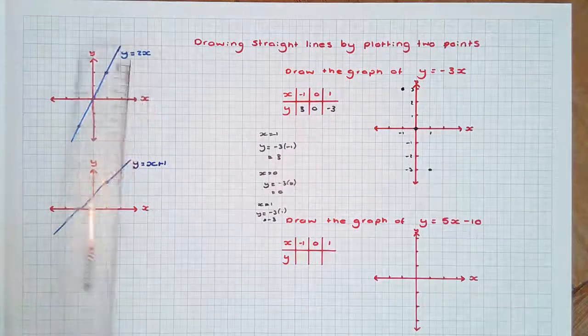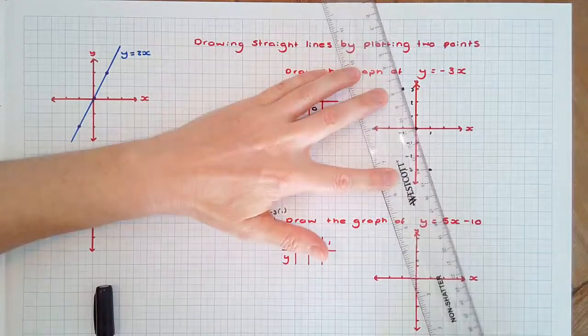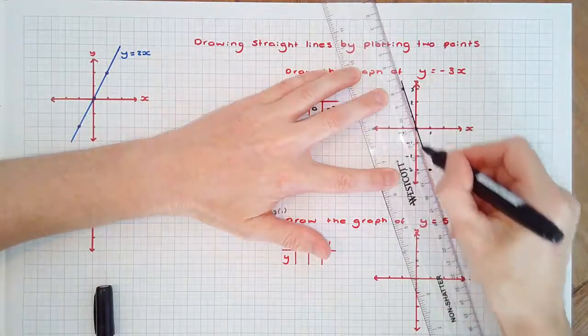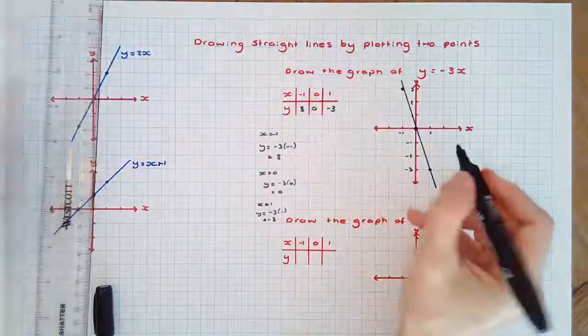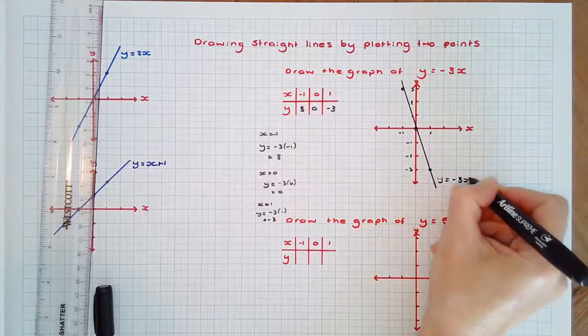Now we have two points and a third as a check. We can connect the points as a straight line graph and label the graph with the equation y equals negative 3x.